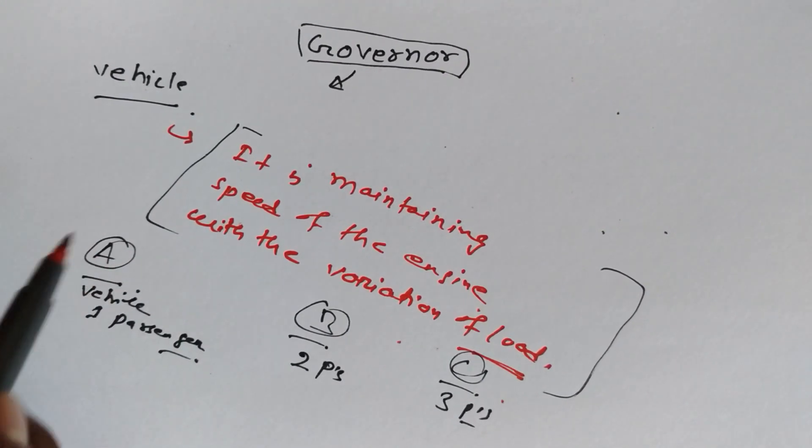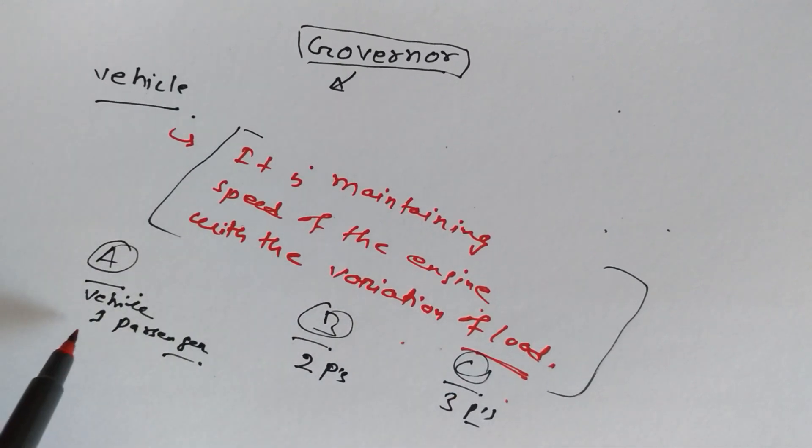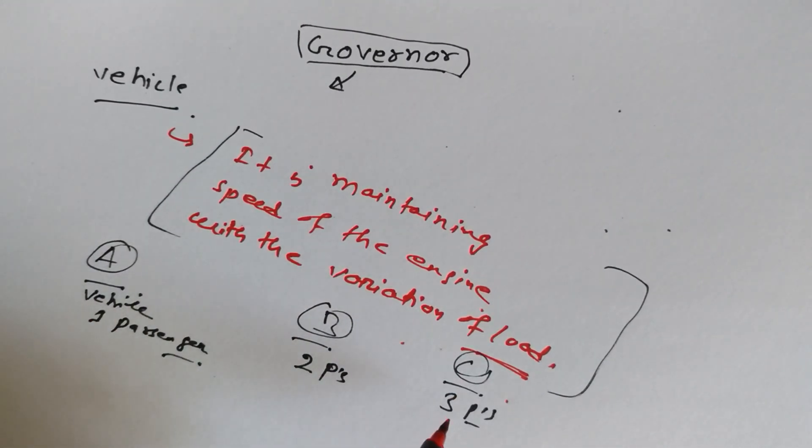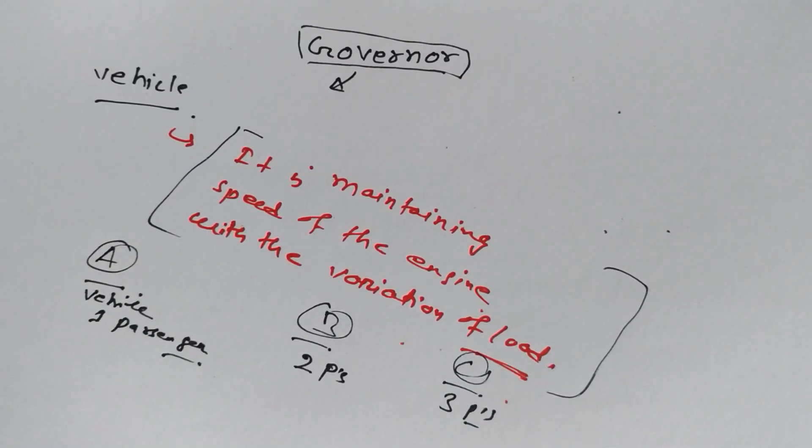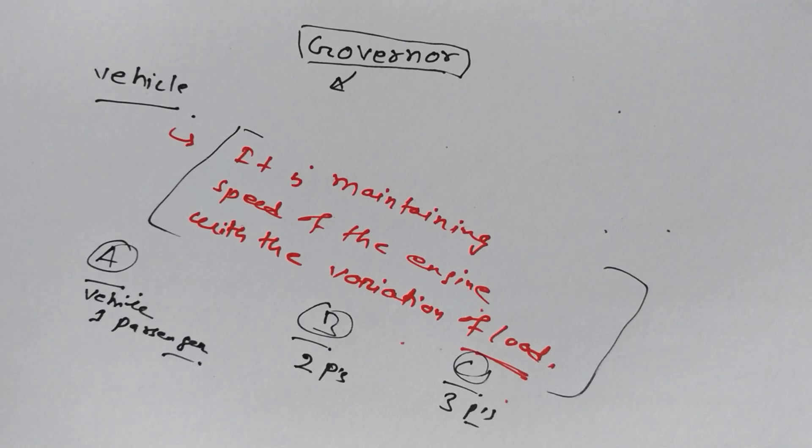But you have to understand this: here the speed is the same, here the speed is the same, and here the speed is the same. But if you see, the load is increasing from stoppage to stoppage. So this is what I was talking about - what this governor is doing.